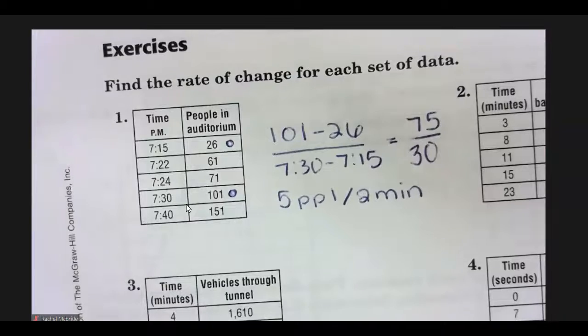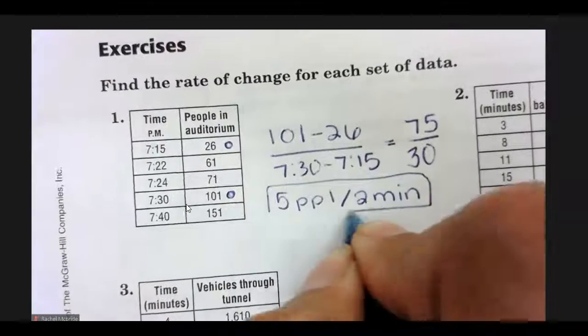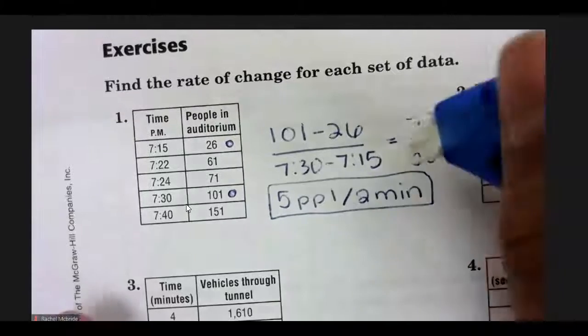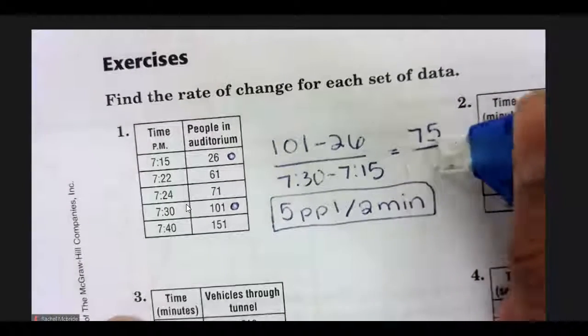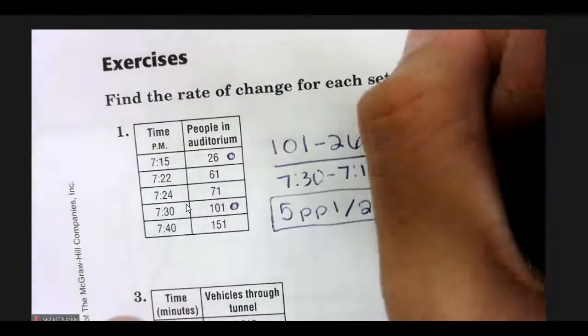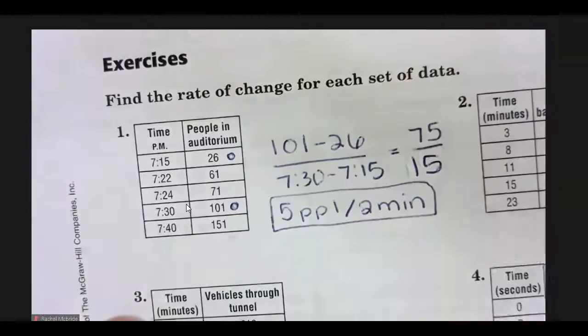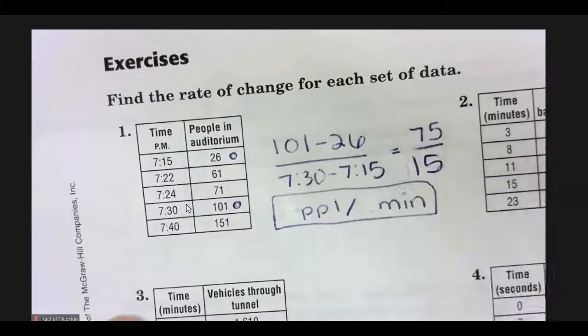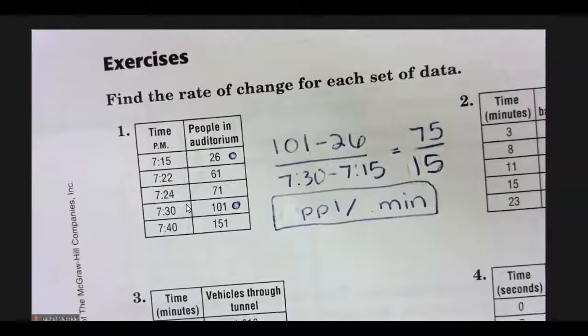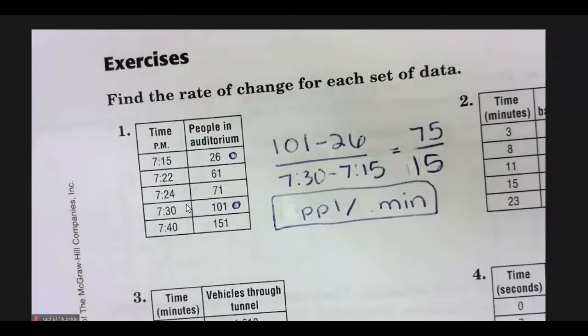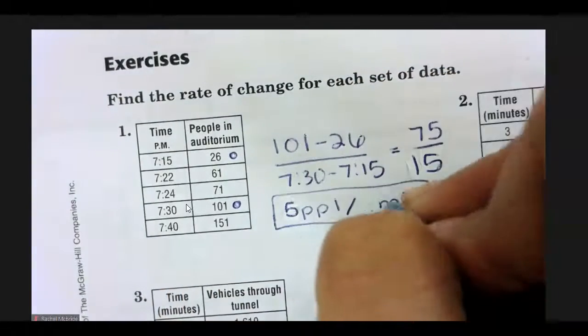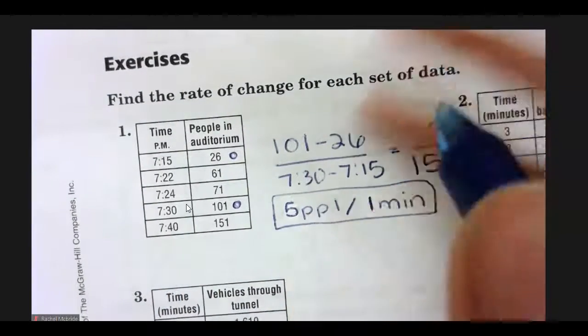Which reduces to 5 people in 2 minutes. So, it should be 15. Thank you. Because I can't speak and read. So, it's 5 people per minute.